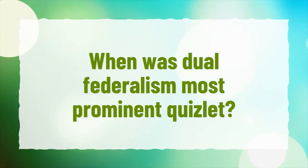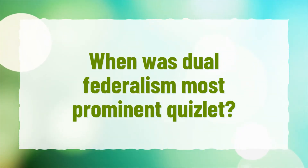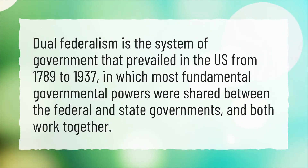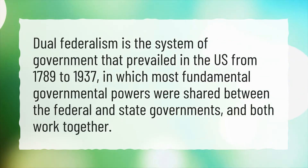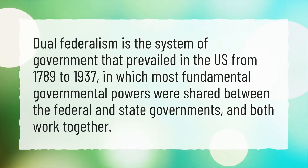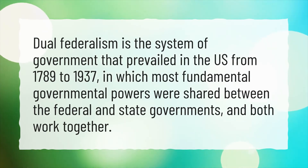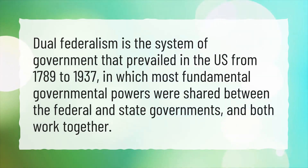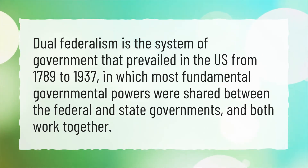When was Dual Federalism most prominent? Dual Federalism is the system of government that prevailed in the U.S. from 1789 to 1937, in which most fundamental governmental powers were shared between the federal and state governments, and both worked together.